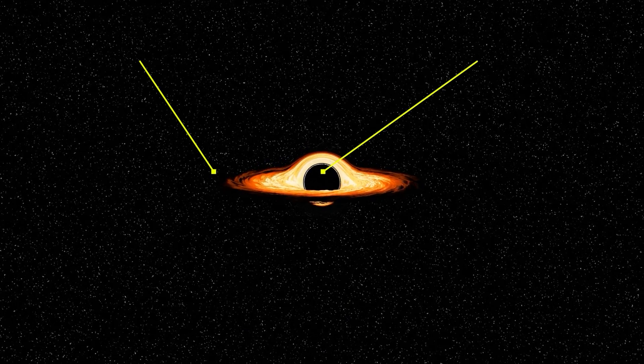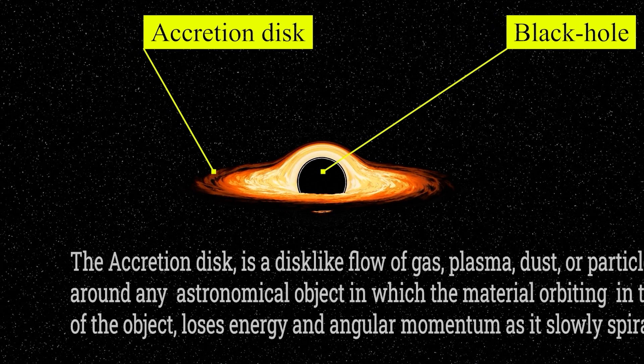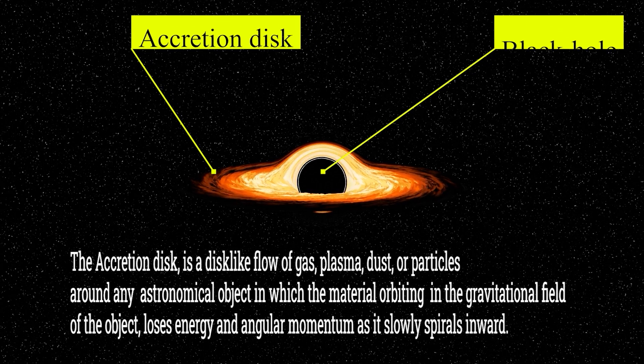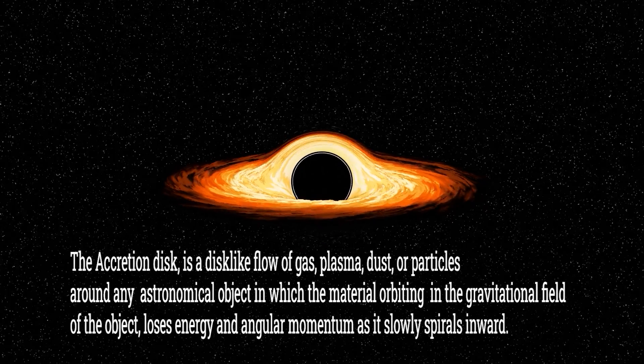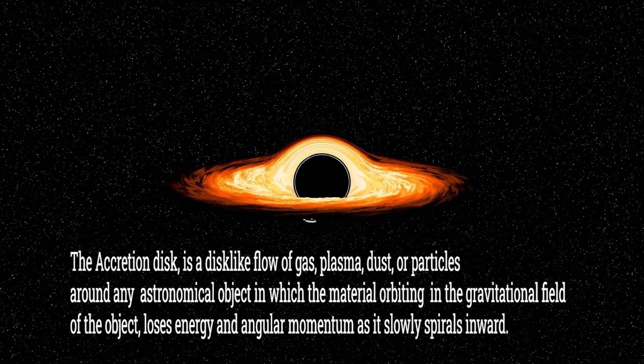An accretion disk is a disk-like flow of gas, plasma, dust, or particles around a black hole, in which material orbiting in the object's gravitational field steadily spirals inwards, losing energy and angular momentum.